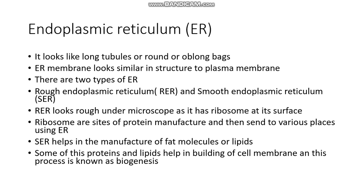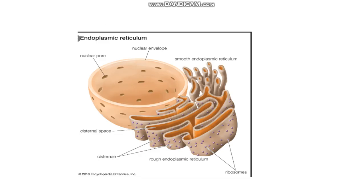Some of the proteins and lipids made by the endoplasmic reticulum help in building the cell membrane, and this process is known as membrane biogenesis — the process in which a cell membrane is made with the help of lipids and proteins. In rough endoplasmic reticulum, ribosomes give it a rough appearance under a microscope. In smooth endoplasmic reticulum, there are no ribosomes, giving it a smooth surface appearance.